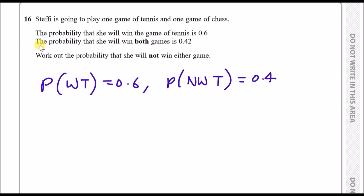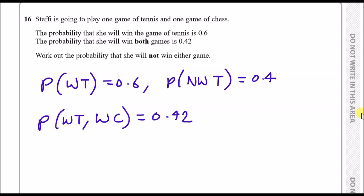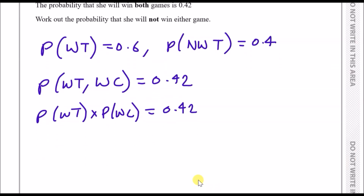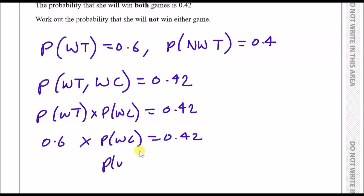The probability that she will win both games is 0.42, meaning the probability she wins tennis AND wins chess is 0.42. We can separate this: the probability she wins tennis (0.6) times the probability she wins chess equals 0.42. Rearranging, we divide 0.42 by 0.6 to find that the probability of winning chess is 0.7.